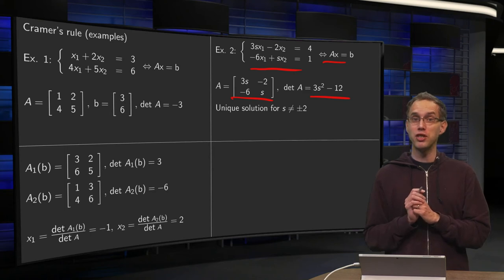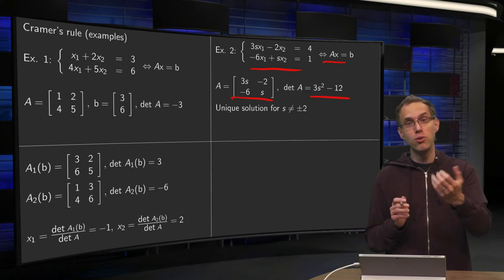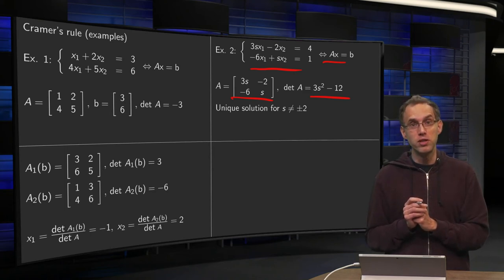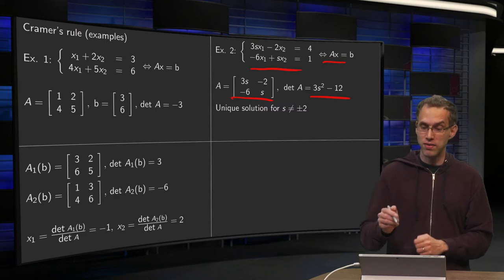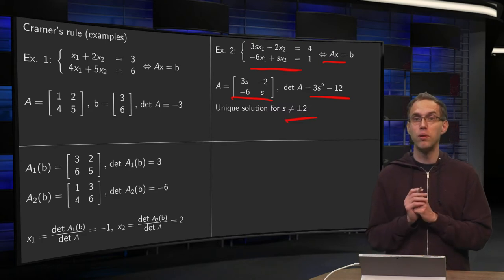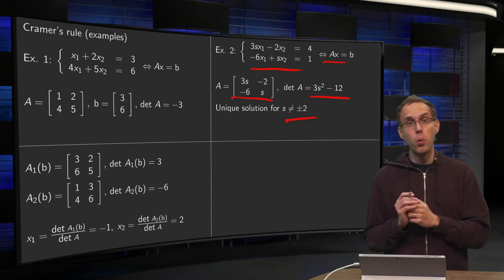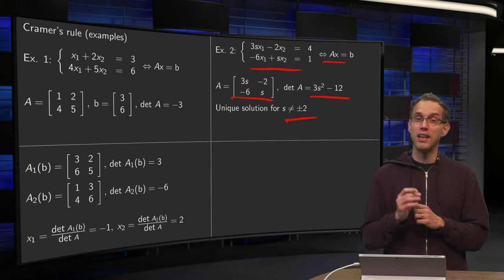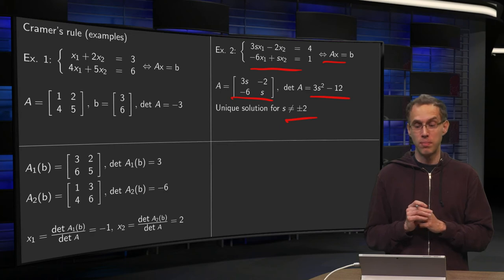So determinant of A equals 3S squared minus 12. Unique solution if and only if the determinant is non-zero. So that's the case if S is not equal to plus or minus 2. So what is our solution then, if S is not equal to plus or minus 2?